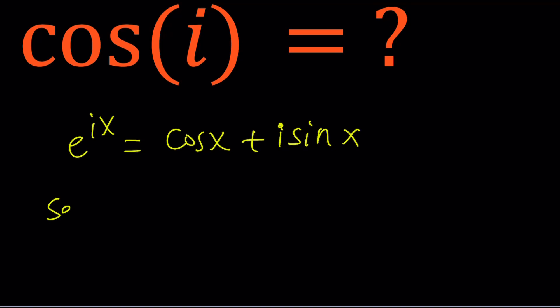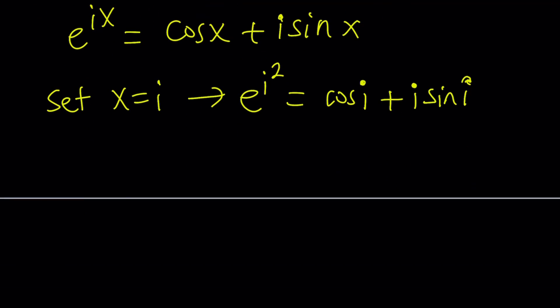If you set x equals i, you're going to get the following. E to the power i squared equals cosine i plus i sine i. A very i expression on the right-hand side, right? i-full. Okay. What is i squared? It's negative 1. So we can write this as e to the power of negative 1 equals cosine i plus i sine i. I'm trying to find cosine i. Can I find it from here? Well, I do need another equation. Right?